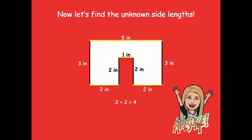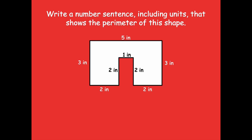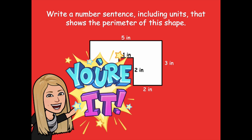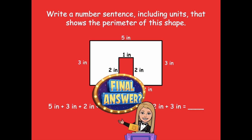Now that we know all the side lengths, we can find the perimeter. Write a number sentence including units. Starting at the top: five inches, then around to the right. A good trick is to trace your finger around the perimeter and write down each side as you go so you don't forget any — like that one inch in the middle. The final answer for the perimeter of this shape is 20 inches. Awesome job!